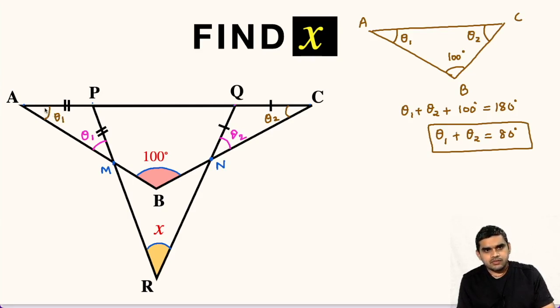Now again, let us focus on triangle APM. Here this angle will be an exterior angle, and the exterior angle is the sum of the opposite interior angles. So theta 1 plus theta 1, that is 2 times theta 1.